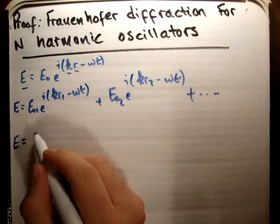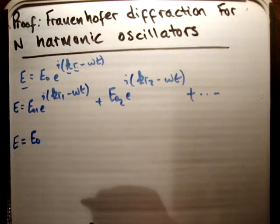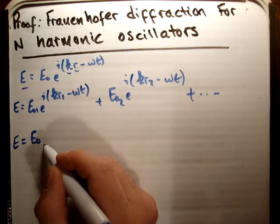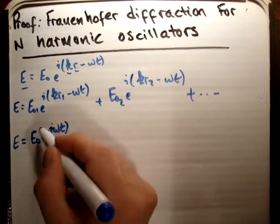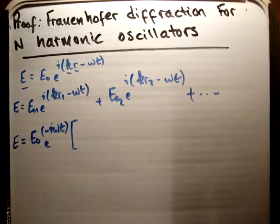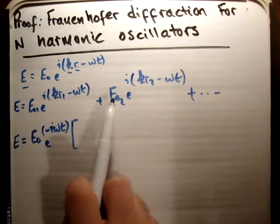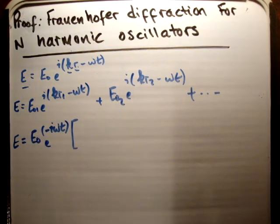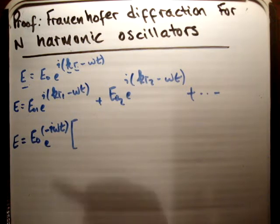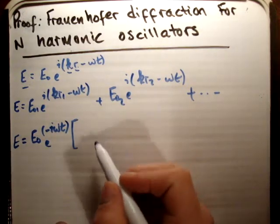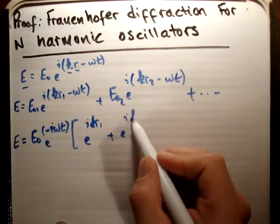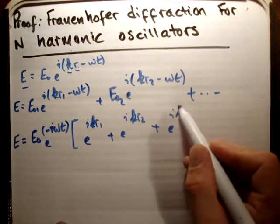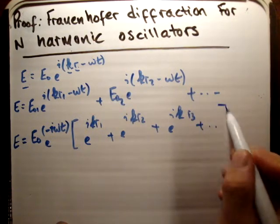We can say E is equal to — pulling out e0, then pulling out the complex exponential e to the negative iωt. I should mention that I'm going to assume each of the initial amplitudes are the same, so I can pull out e0 rather than having n different initial amplitudes. That leaves us multiplying by e to the ikr1 plus e to the ikr2 plus e to the ikr3 plus dot dot dot.